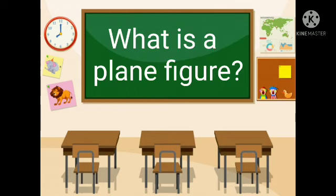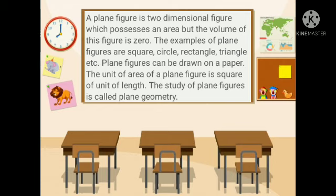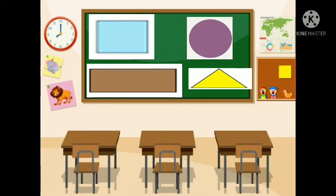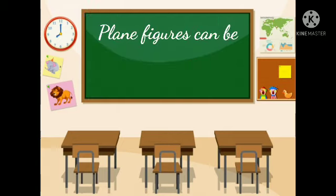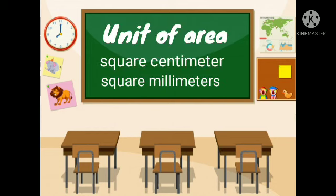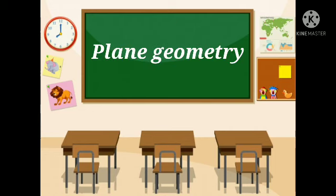What is a plain figure? A plain figure is a two-dimensional figure which possesses an area but the volume of this figure is zero. The examples of plain figures are square, circle, rectangle, triangle, and other shapes that are plain. Plain figures can be drawn on a paper. The unit of area of a plain figure is square of unit of length. And the study of plain figures is called plain geometry.